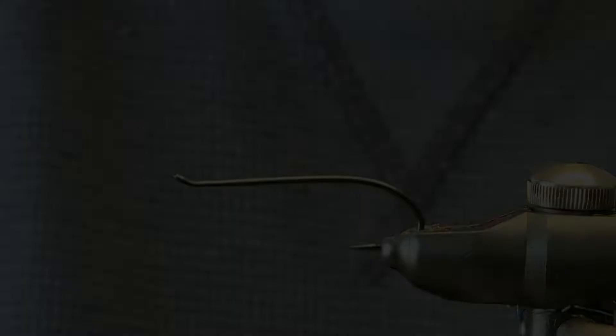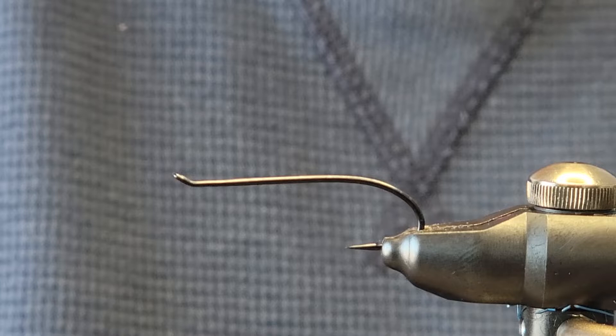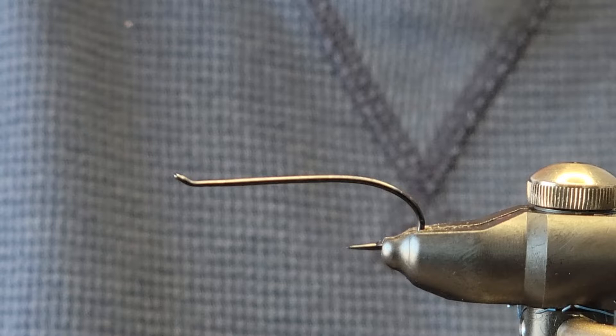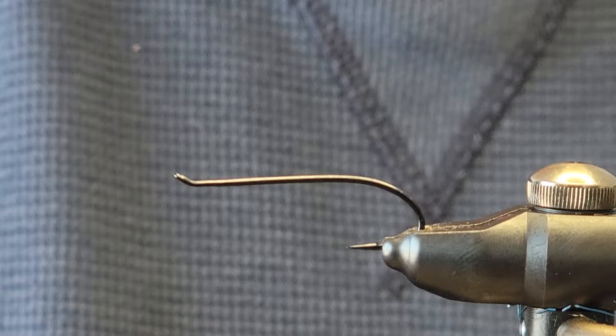Hi guys, welcome back. Today we are tying a very messy but very good pattern - the Atlantic Salmon Bug. We're doing an orange Atlantic Salmon Bug with a chartreuse butt. These are great to fish for Atlantic Salmon and brown and rainbow trout.